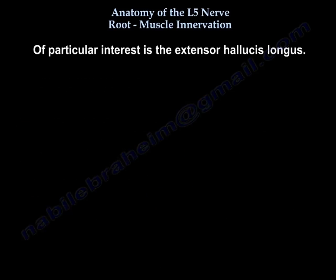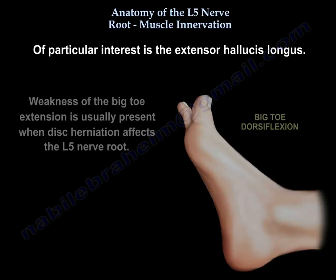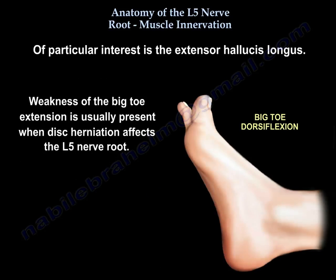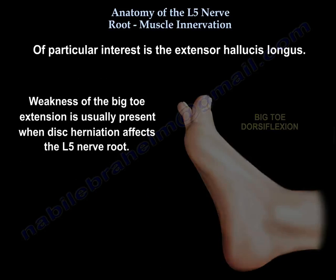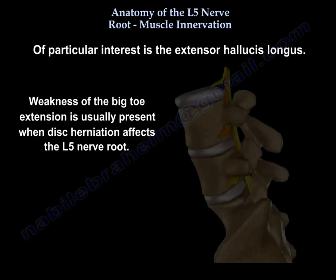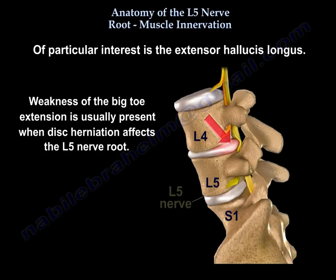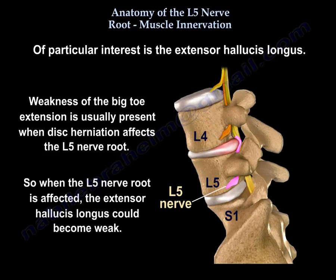Of particular interest is the extensor hallucis longus — weakness of big toe extension is usually present when disc herniation affects the L5 nerve root. So when the L5 nerve root is affected, the extensor hallucis longus can become weak.